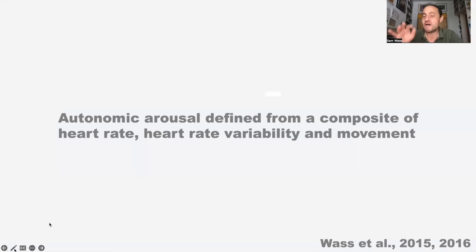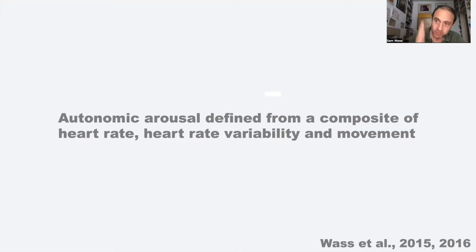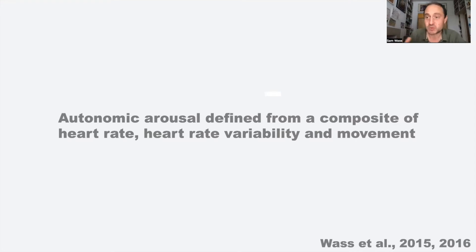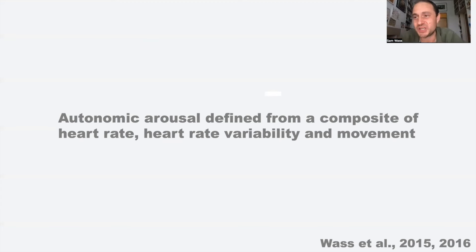For what I'm going to say now, I've defined autonomic nervous system activity from a composite of heart rate, heart rate variability, and movement. We're treating it as a one-dimensional construct from highly aroused - high sympathetic fight-or-flight nervous system - to low arousal, which is high parasympathetic rest-and-digest. I know there are problems with treating it as one-dimensional, and it can be seen as multiple separable subfactors, but for now autonomic arousal is one dimension from aroused to not aroused.